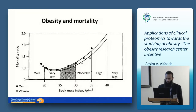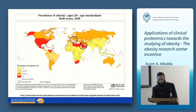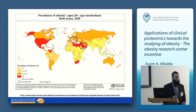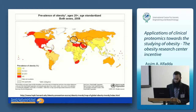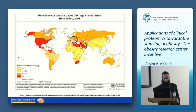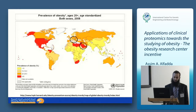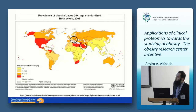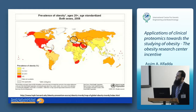King Saud University's Obesity Research Center was established as an initiative of the national plan of science and technology, implemented about five years ago. The center studies obesity from different perspectives. I have some slides comparing the prevalence of obesity between Saudi Arabia and Italy, from WHO data in 2011, and you can see that we beat Italy here.